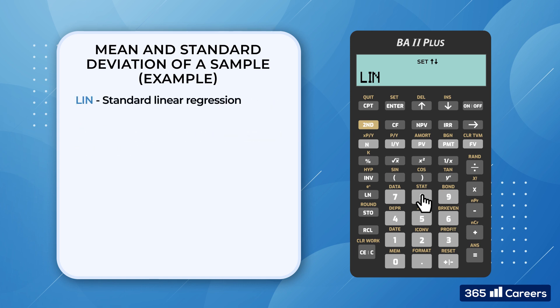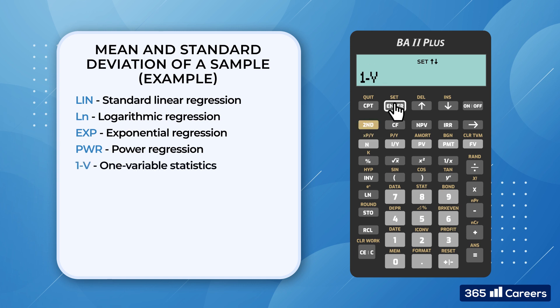LIN stands for Standard Linear Regression. LN designates Logarithmic Regression. EXP is for Exponential Regression. PWR stands for Power Regression. And finally, 1-V represents 1 variable statistics. This is the method we will use for the problem at hand.